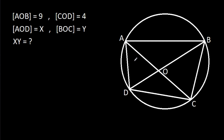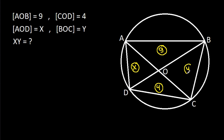In this video, we have been given that area of AOB is 9, area of COD is 4, area of AOD is X, and area of BOC is Y. We have to find X times Y.